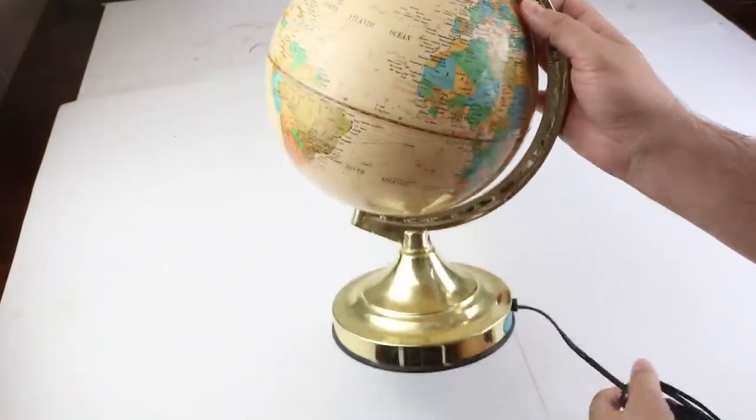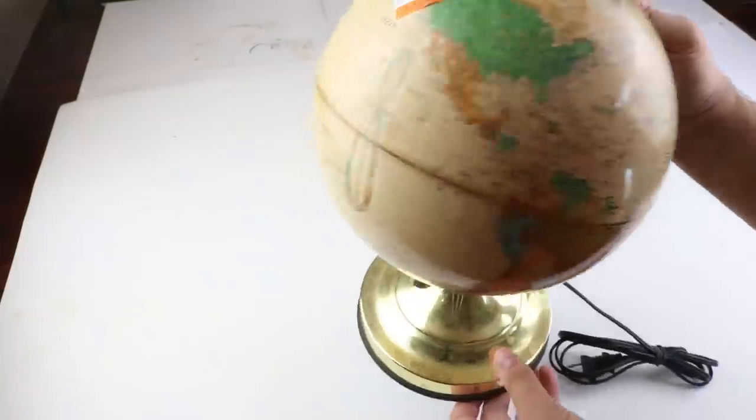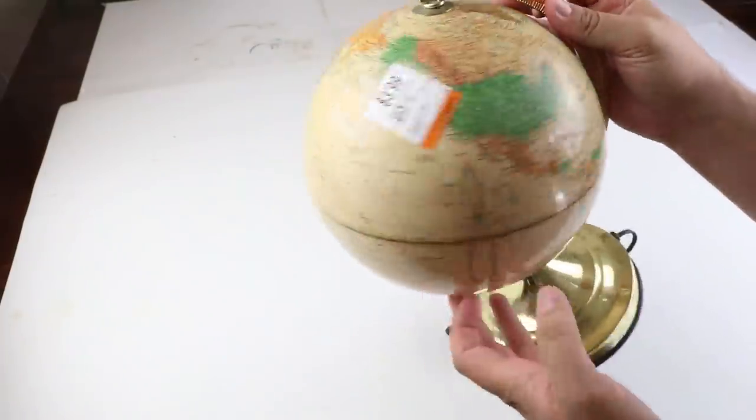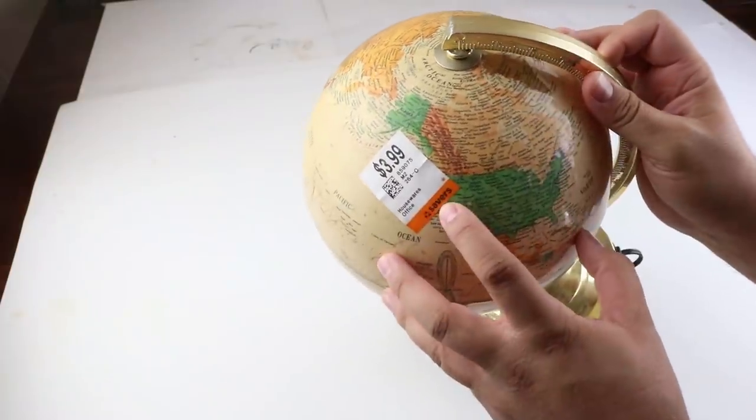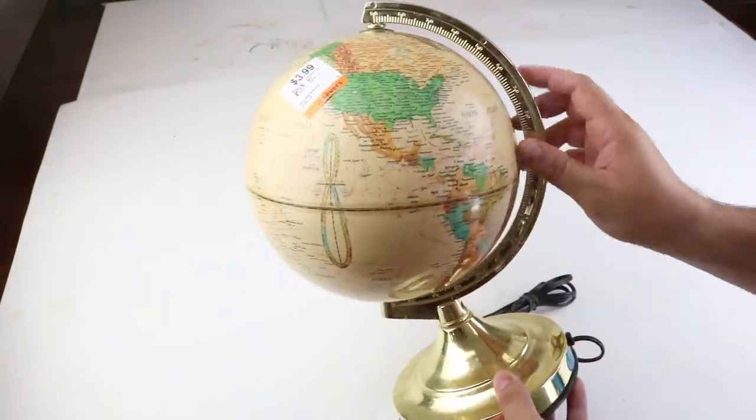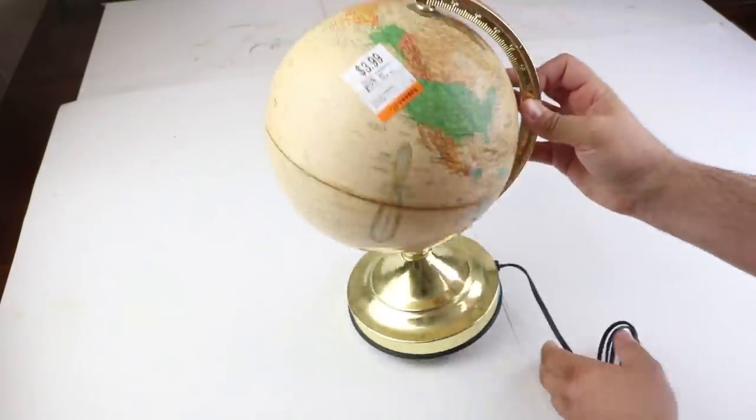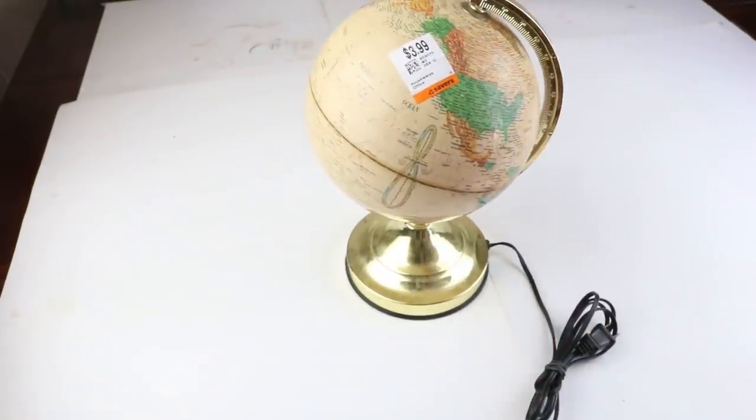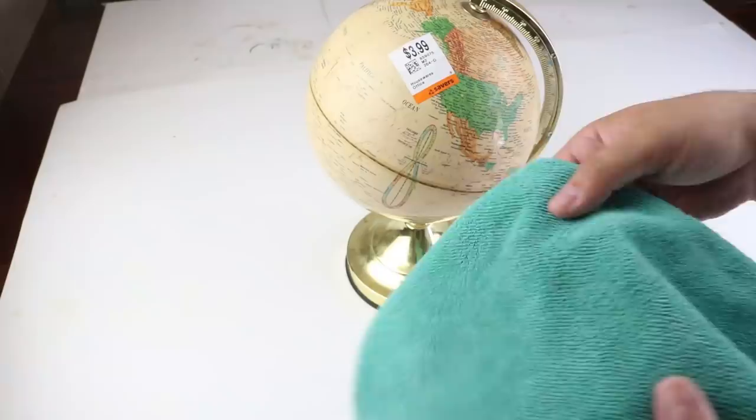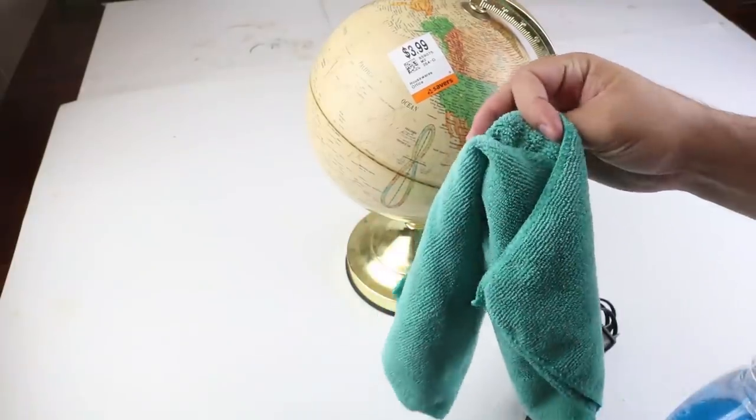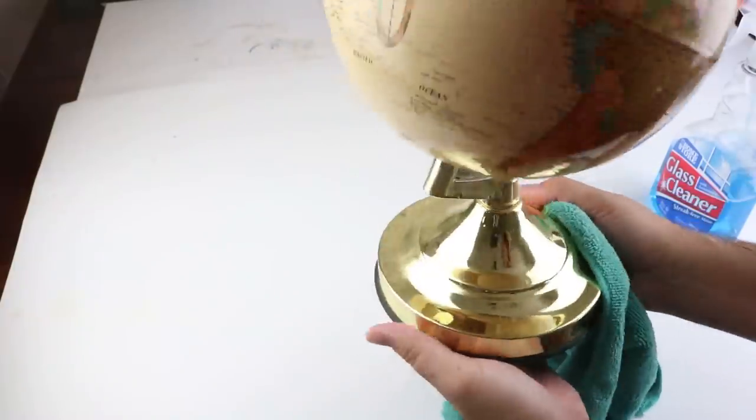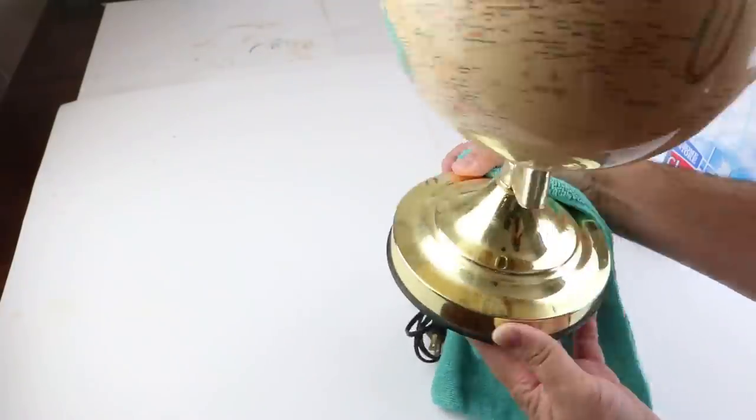For this project we're going to be using this globe that we got from Savers for just four dollars. Since it is a secondhand store, we want to make sure that we are cleaning all of this. I would use some kind of disinfectant to go through and clean all the items that you get from the thrift store, and then maybe use a glass cleaner or degreaser to clean it up a little bit more. Maybe even use an alcohol wipe so that when we paint these the paint will stick to them. I'm just using a glass cleaner to go over everything and clean this up.